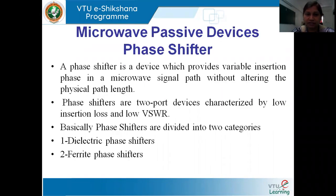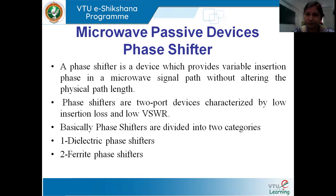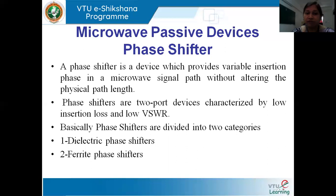Basically, what is a phase shifter? We know that in the waveguide, when the wave is propagating, it is associated with a certain magnitude and certain phase, whatever the electric field we are considering. We take it as a vector quantity associated with magnitude and phase. Now we have to change the phase of the wave, and that can be done using a phase shifter.